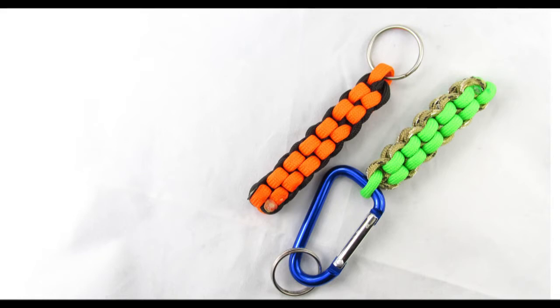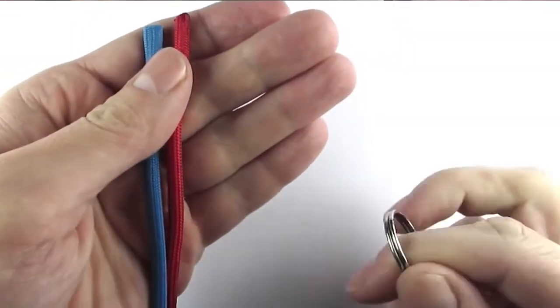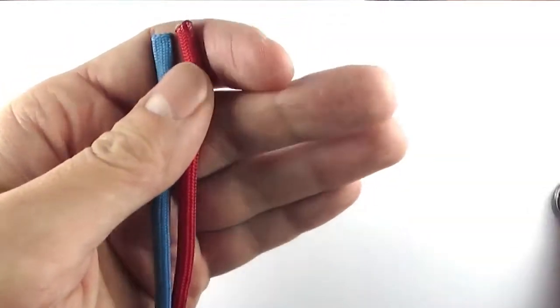Now what you're going to need for this project is two pieces of paracord as well as a keyring.